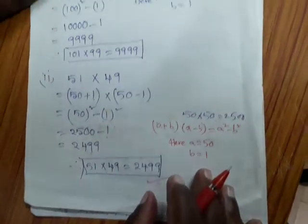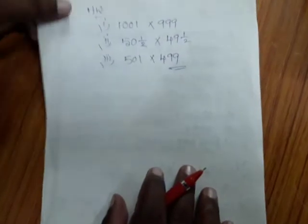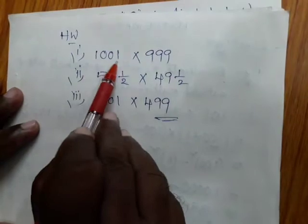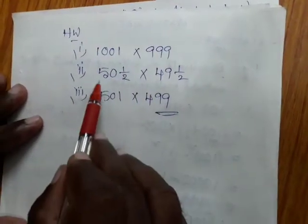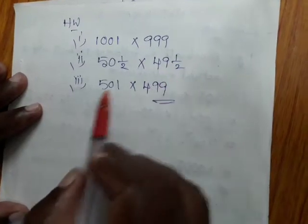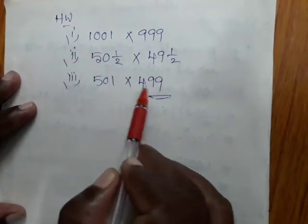Now I will give you some homework. Children, I hope you understood well. Homework please with this: 1001 into 999, 50 and a half into 49 and a half, 501 into 499.